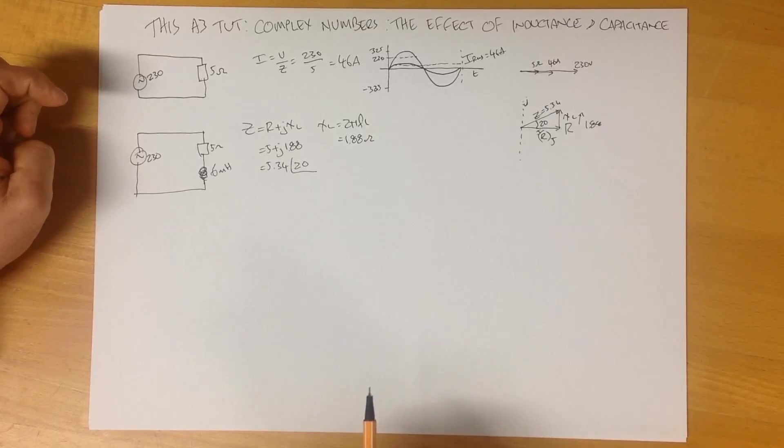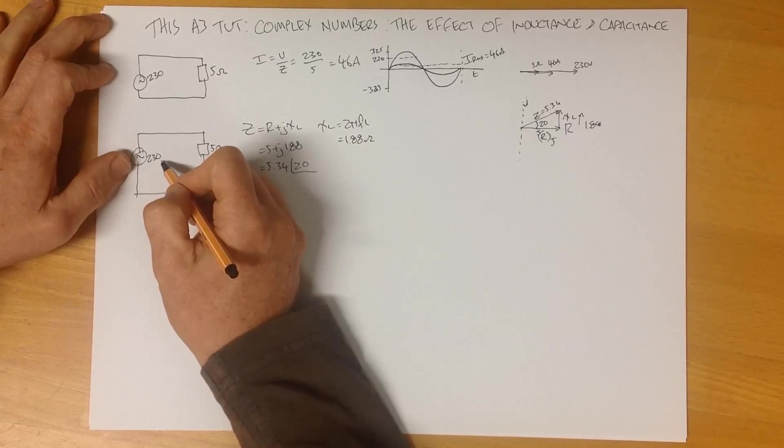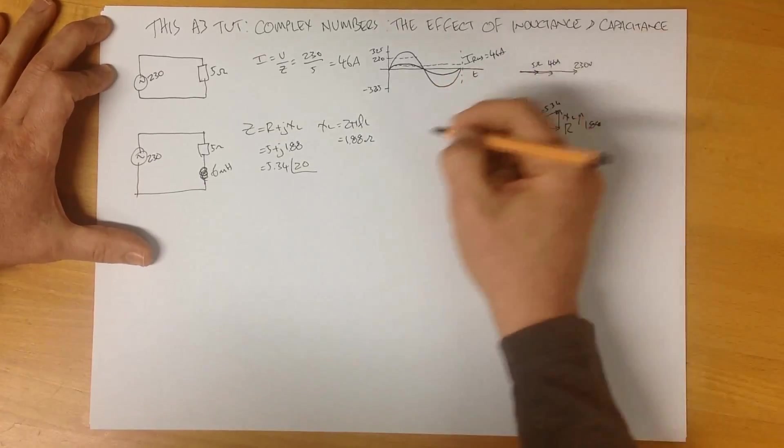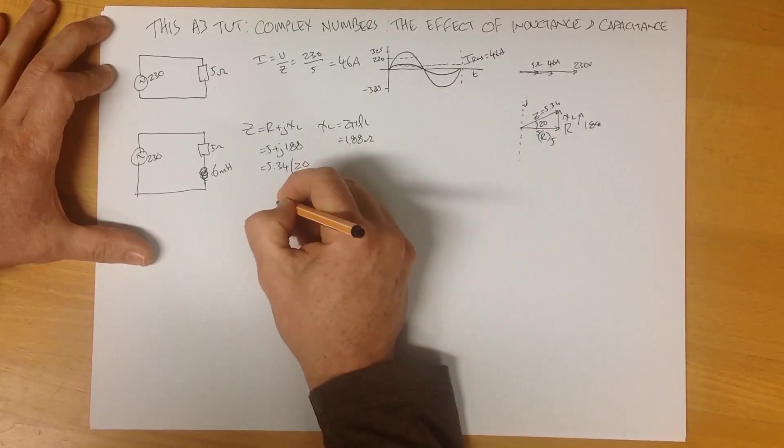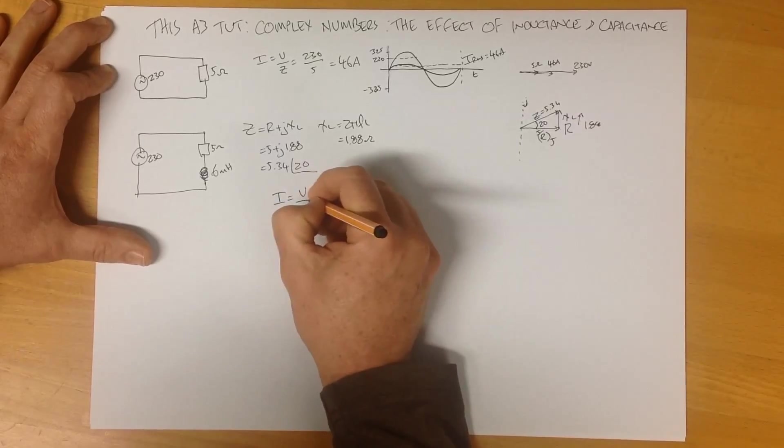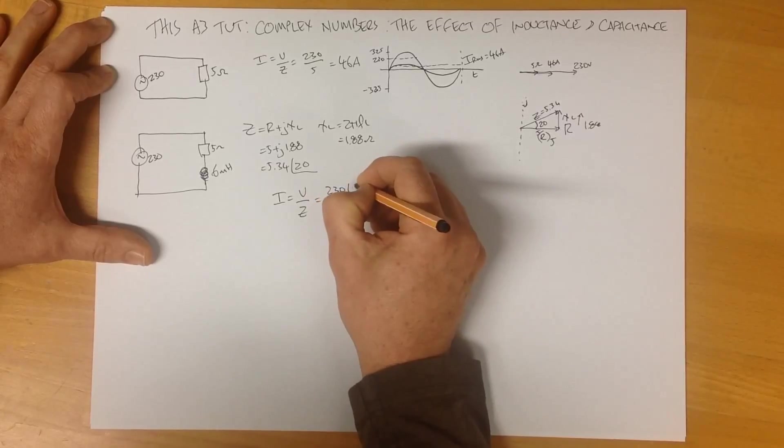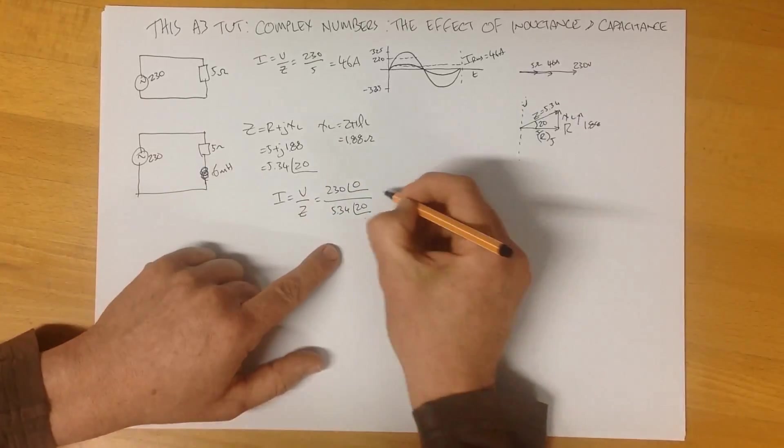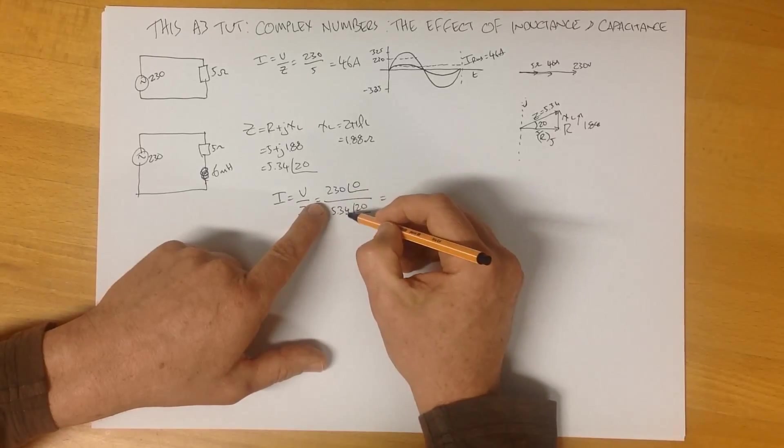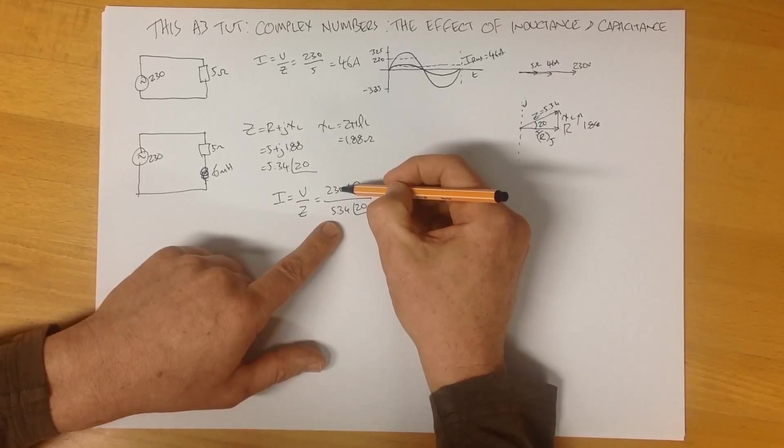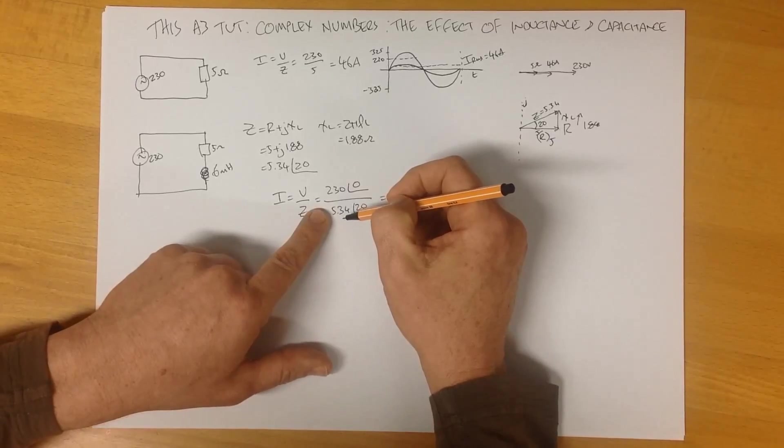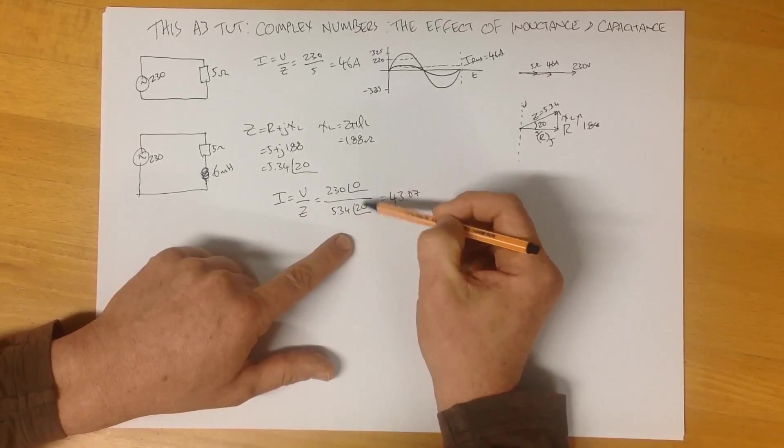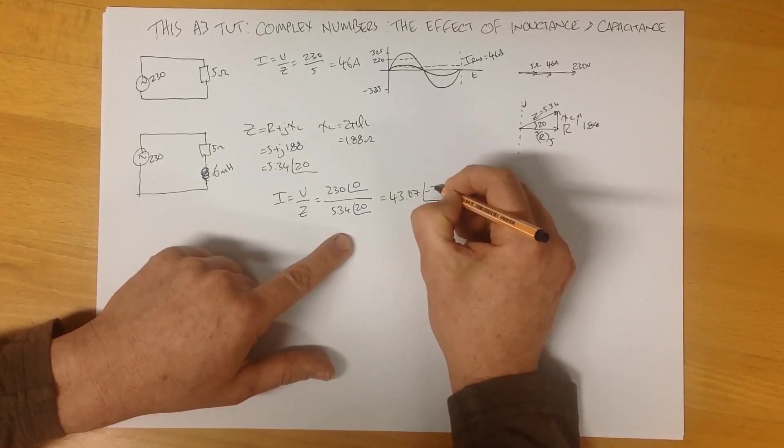We can then calculate our current based on this impedance, and as I've said, our voltage is 230 volts, and we're going to assume that that has a reference in the time domain of nothing. So, to find our total current, it is the voltage over the impedance, which is 230 volts at an angle of 0 degrees. Over our impedance, over our impedance, 5.34 at 20 degrees. So our total current is that divided by that. To do these, we divide the real part, so 230 divided by 5.34, which will give us an answer of 43.07, and we subtract the angles. So it's divide the real, subtract the angles. 0 minus 20 gives us an angle of minus 20 degrees.